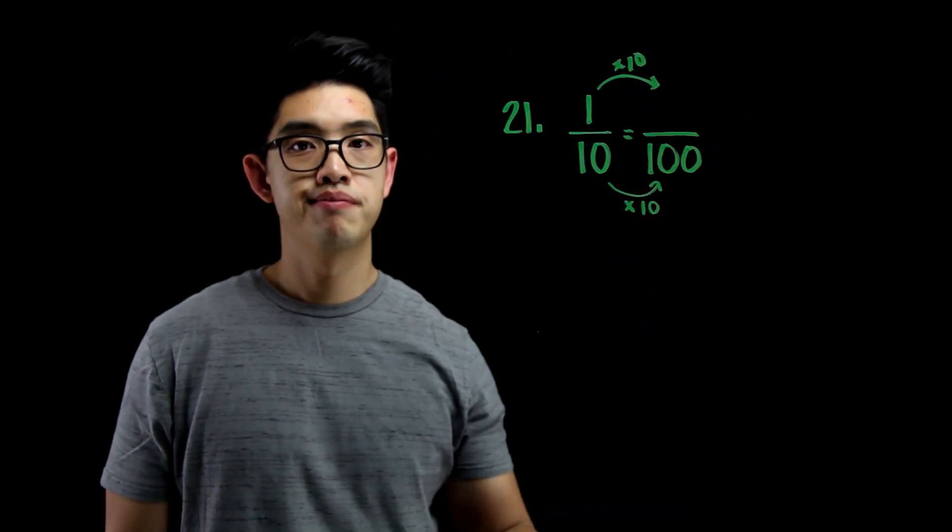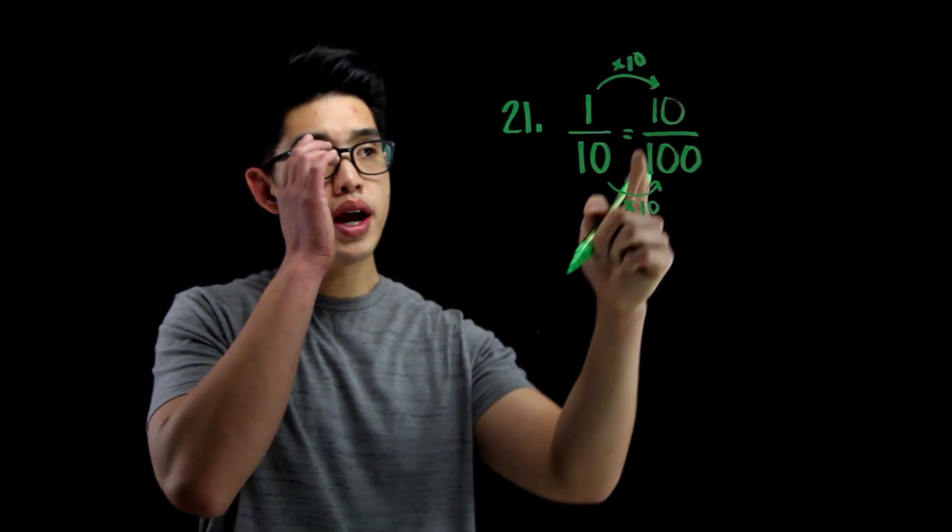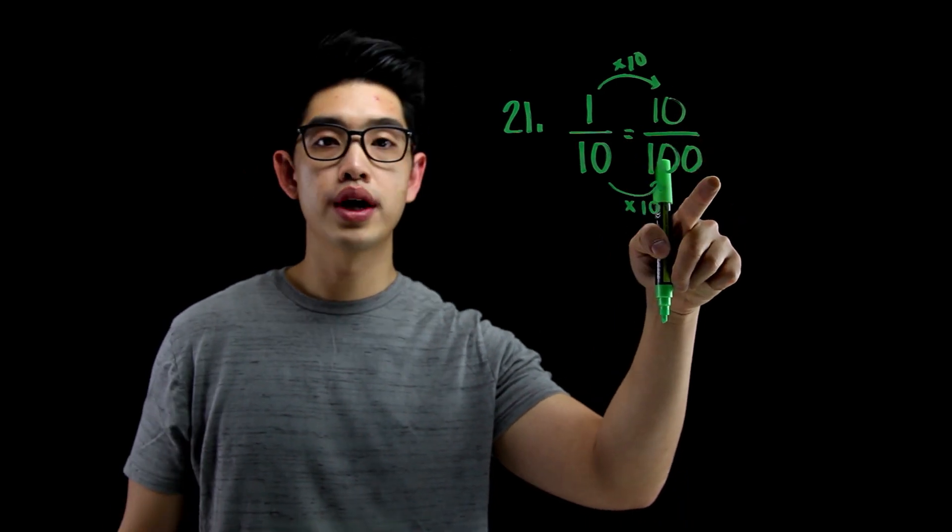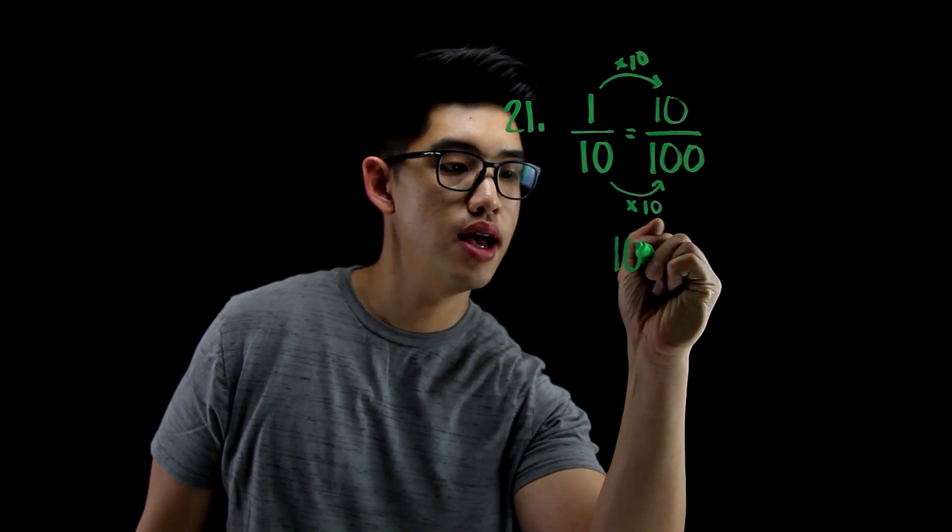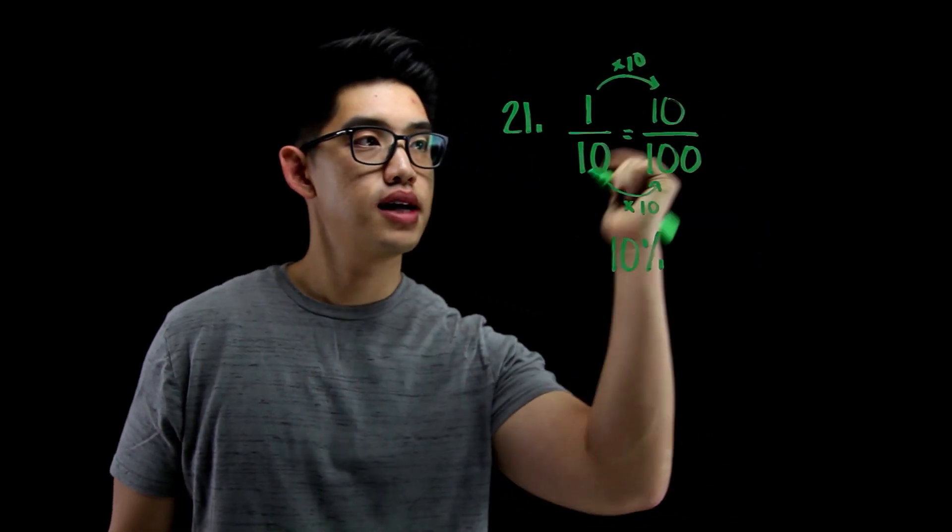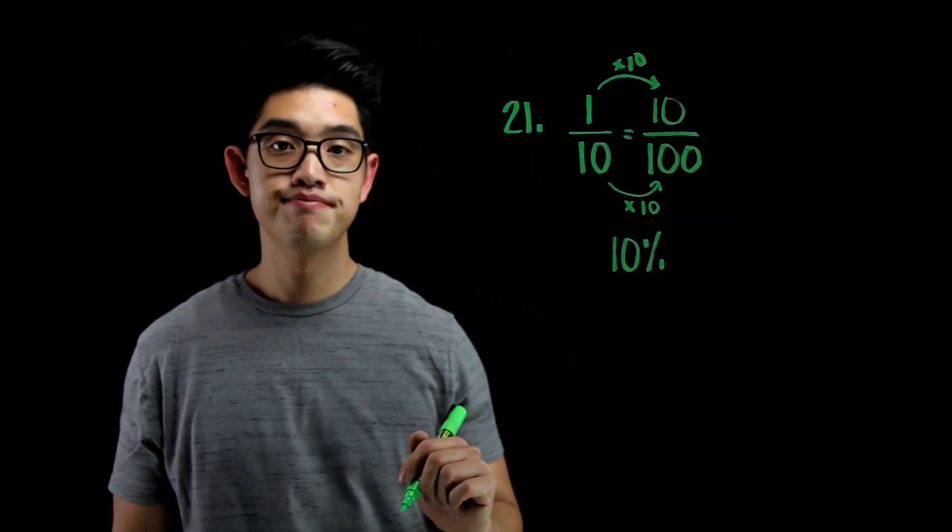1 times 10, easy. That's going to be 10. So right here I have 10 per 100. So 10 percent per 100. So my answer is 10 percent because that's that number right there and that's my answer.